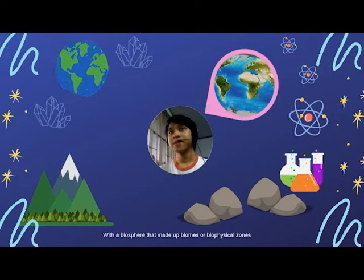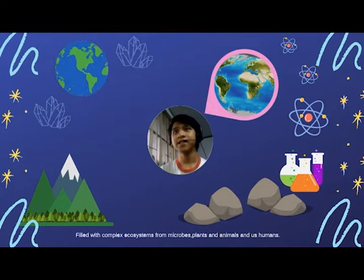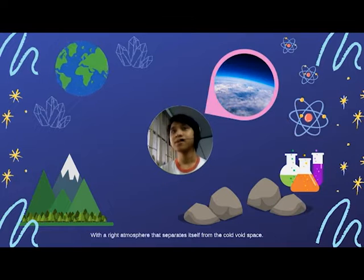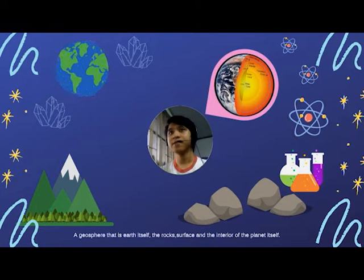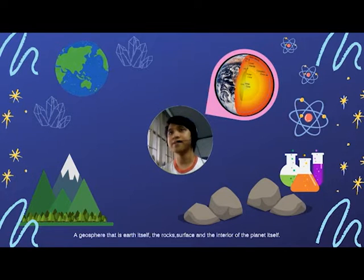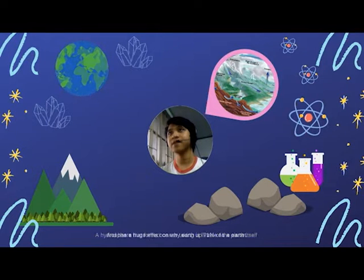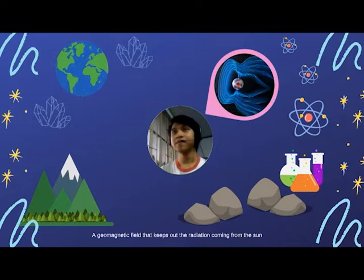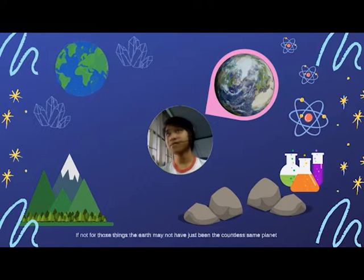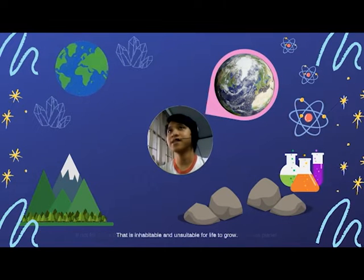Earth has a biosphere made of biomes or biophysical zones filled with complex ecosystems from microbes, plants, animals, and humans. It has the right atmosphere that separates itself from the cold void of space, a geosphere that is Earth itself — the rocks, surface, and interior of the planet — a hydrosphere that forms oceans taking up 71 percent of the Earth, and a geomagnetic field that keeps out radiation coming from the sun.